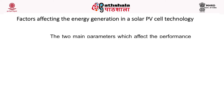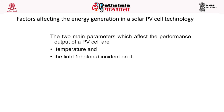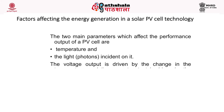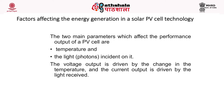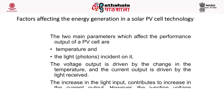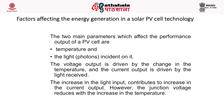The factors that affect energy generation in a solar PV cell are two main parameters: temperature and light (photons incident on it). The voltage output is driven by the change in temperature, and the current output is driven by the light received. An increase in light input contributes to an increase in current output. However, the junction voltage reduces with an increase in temperature.